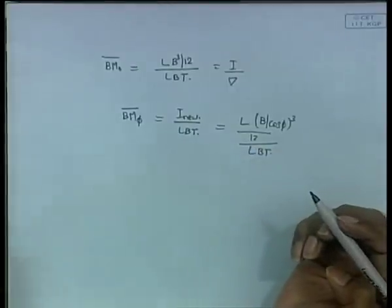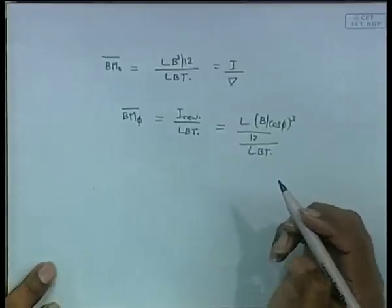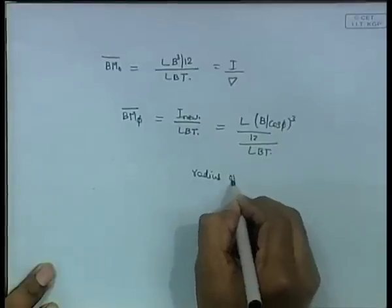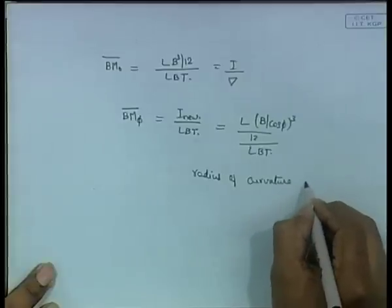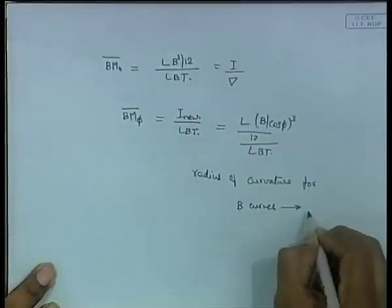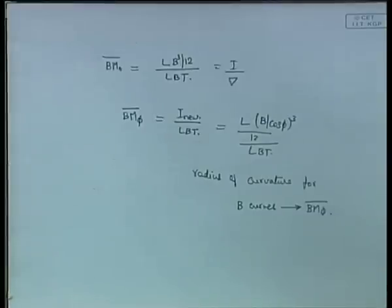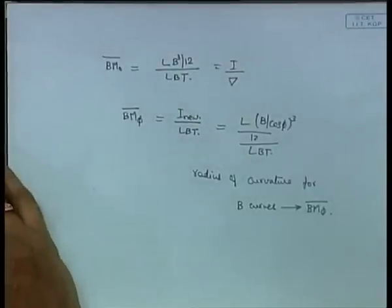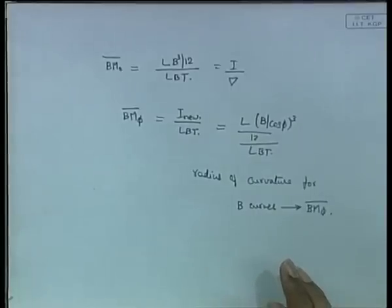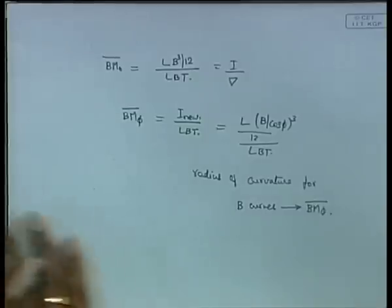BM_0 is straightforward. BM_phi is slightly more complicated because when the body tilts, the waterplane distance is no longer B but B/cos phi. We will see that the radius of curvature calculated for the B curve tends toward the value of BM_phi. We will continue with that in the next session since time is up.